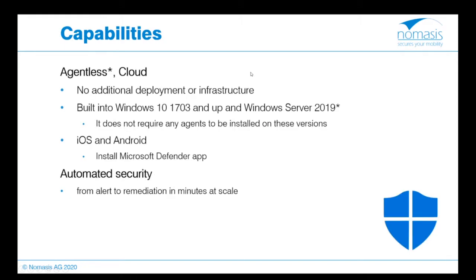Regarding capabilities: the solution is agentless and cloud-based. For Windows 10 version 1703 and Windows Server 2019, you do not need any agents installed. For iOS and Android, you need to install the Microsoft Defender app. The most important capability is automated security, covering the end-to-end lifecycle from protection and detection to investigation and response. Automated investigation leverages state-of-the-art AI to resolve incidents and determine whether a threat is real and what action to take.